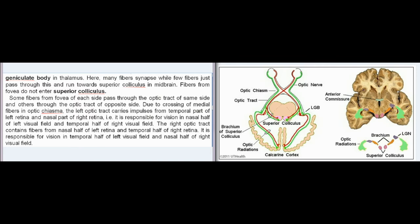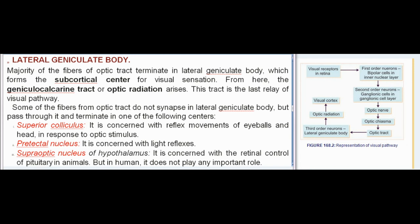Many fibers synapse in the lateral geniculate body, while few fibers pass through and run towards the superior colliculus in the midbrain. Fibers from the fovea do not enter the superior colliculus. Due to crossing of medial fibers in the optic chiasma, the left optic tract carries impulses from the temporal part of the left retina and nasal part of the right retina, responsible for vision in the nasal half of the left visual field and temporal half of the right visual field. The right optic tract contains fibers from the nasal half of the left retina and temporal half of the right retina, responsible for vision in the temporal half of the left visual field and nasal half of the right visual field.